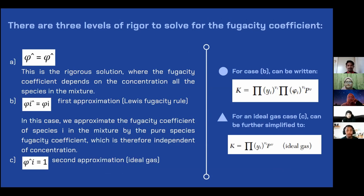There are three levels of rigor to solve for the fugacity coefficient. In this thermodynamic equilibrium, the rigor is a term that refers to a state of stiffness or strictness. For the first rigor, this is the rigorous solution where the fugacity coefficient depends on the concentration of the species in the mixture. For the second, which is case B, it is the first approximation, or known as Lewis fugacity rule. In this case, we approximate the fugacity coefficient of species in the mixture by the pure species fugacity coefficient, which is therefore independent of concentration. For the next case C, the final case is second approximation, or also known as ideal gas.